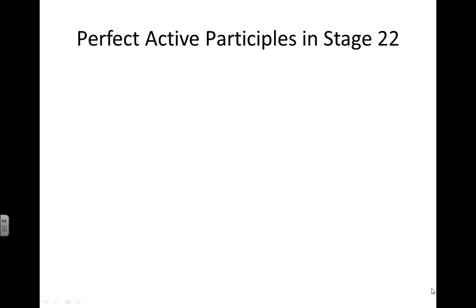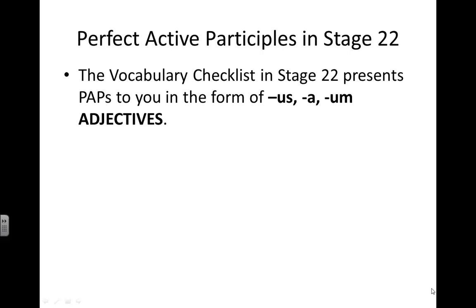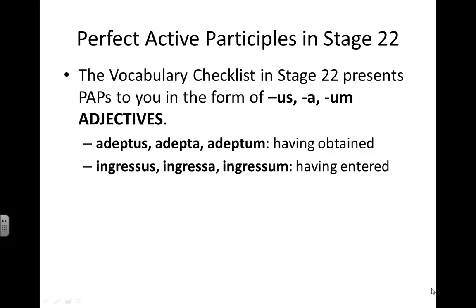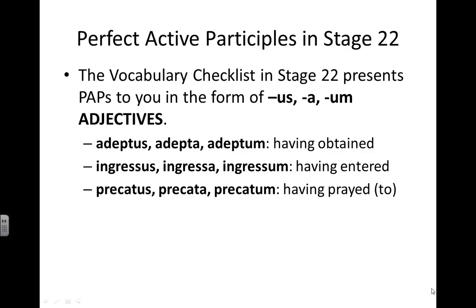For your perfect active participles in Stage 22, you will recognize them from your vocabulary checklist because they are presented to you in the form of us, a, um adjectives. For example: adeptus, adepta, adeptum — us, a, um — 'having obtained'; ingressus, ingressa, ingressum — 'having entered'; precatus, precata, precatum — 'having prayed to.' In recognizing the us, a, um form as an adjective, you will remember that these adjectives are specifically perfect active participles.